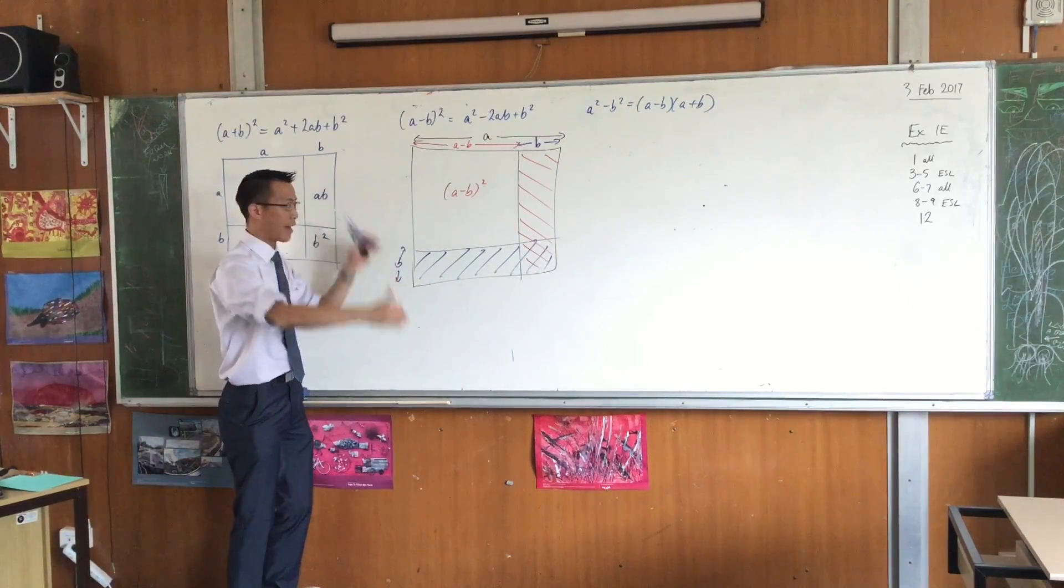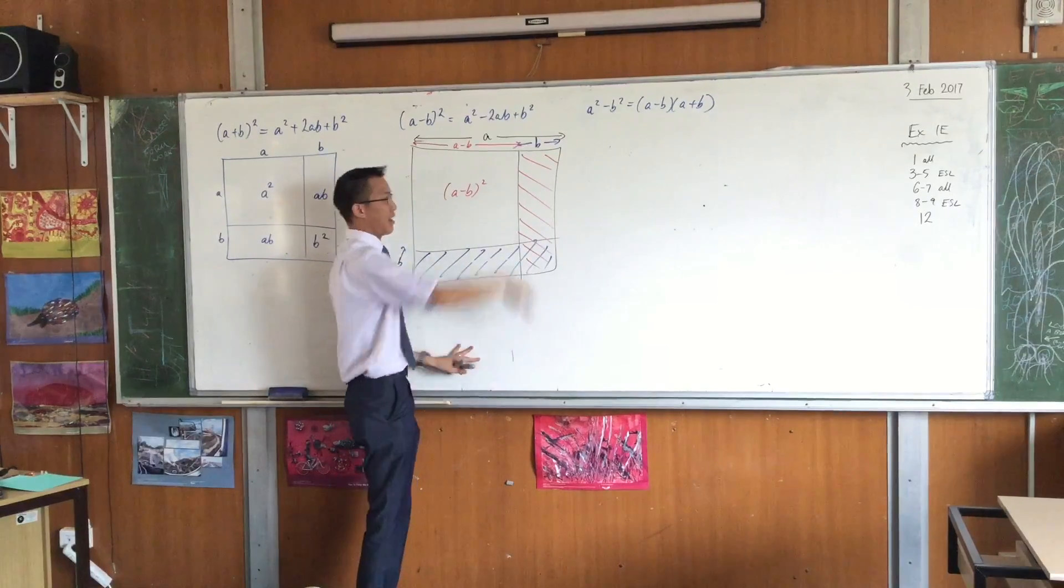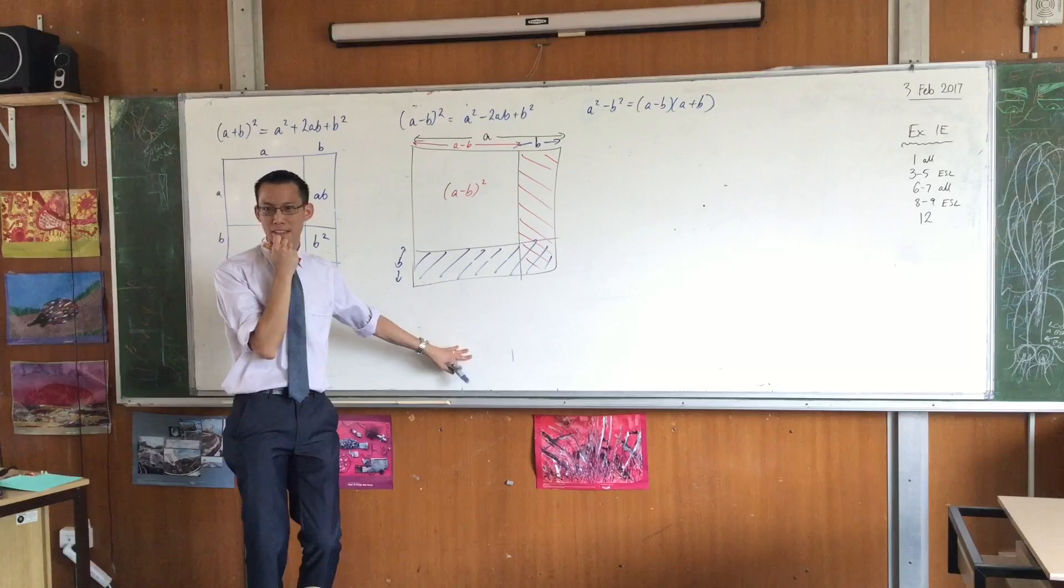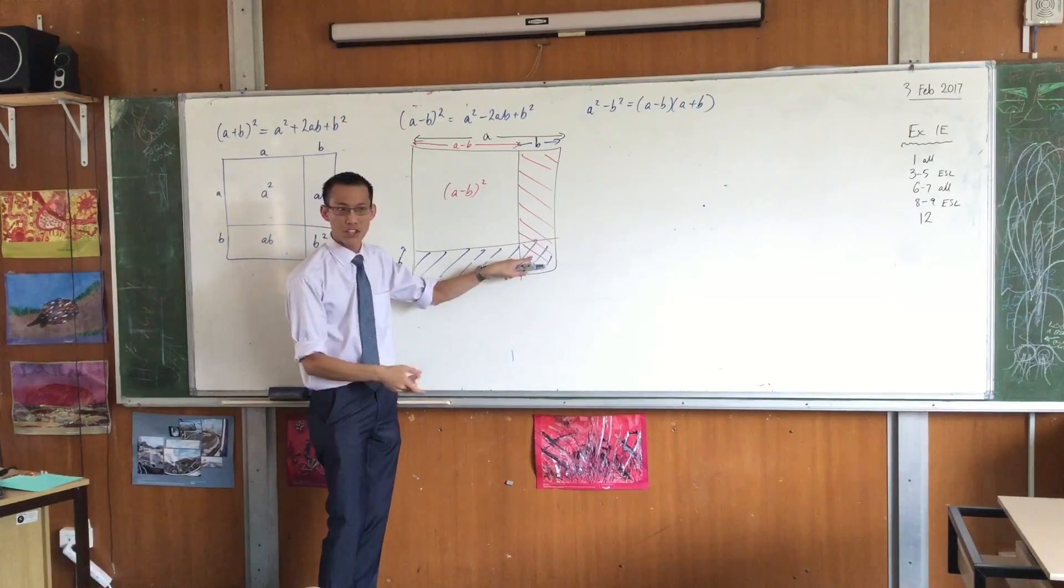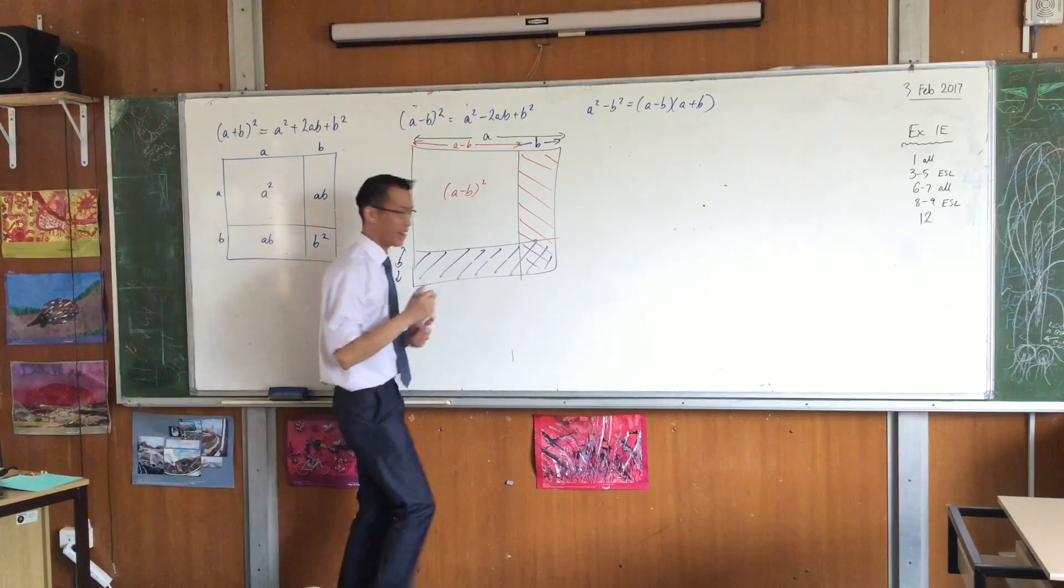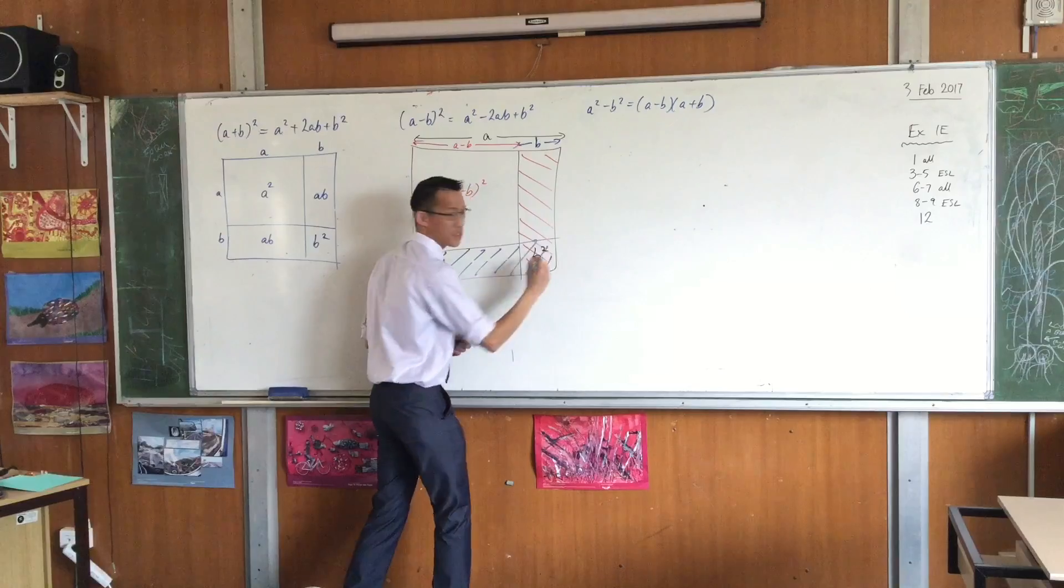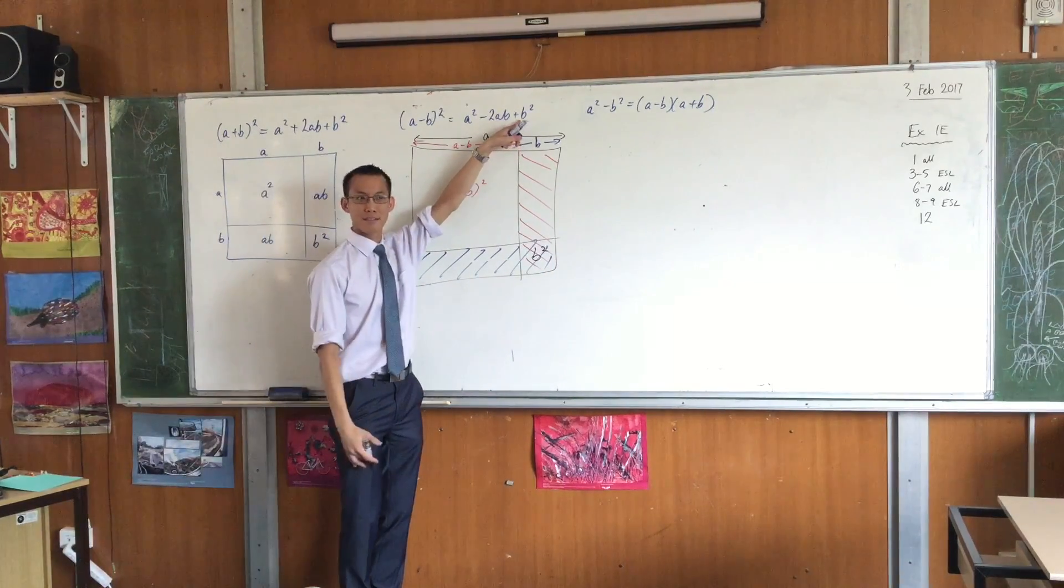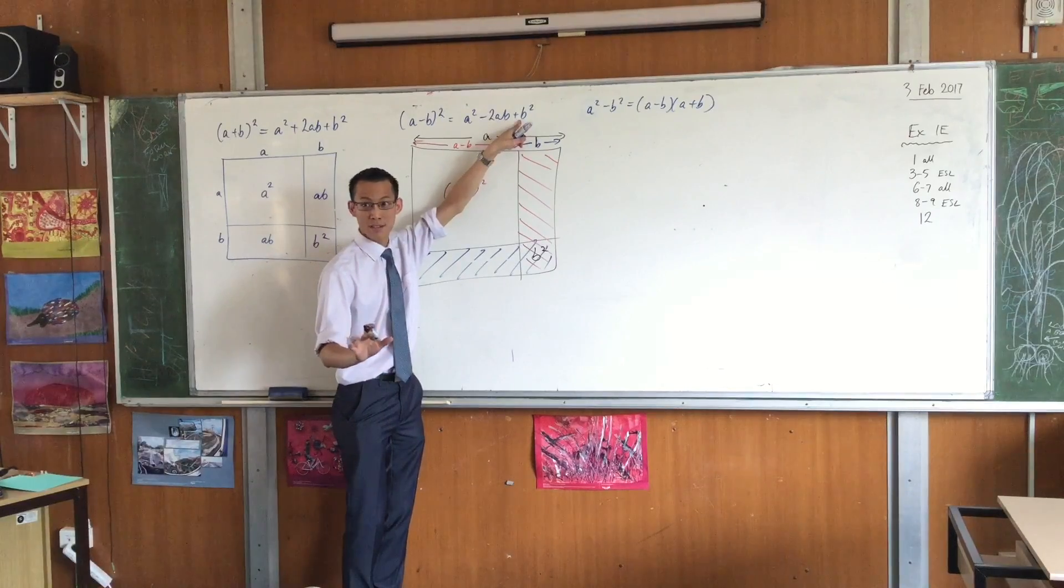So you start with your big square, then you take off this, and then you take off that. But what if you don't? You have taken away this guy, which is b squared. You've taken it away twice. You didn't mean to take it away twice. So what should you do? Just add one back, and you're fine. Make sense? Yeah.